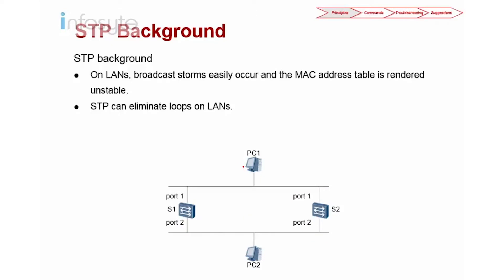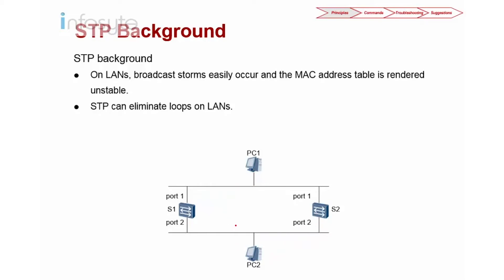Even if it's not a broadcast but a unicast, we still have a problem: because both links are forwarding, the MAC address will be flapping between port one and port two of the switches, since both are forwarding and learning at different times. Either of these problems will cause your network to fail. So to stop looping as well as MAC address flapping, STP was introduced to prevent the loop.